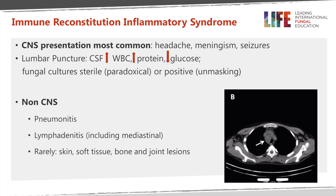IRIS can also occur outside the central nervous system. It can present with new respiratory symptoms and a pneumonitis on chest X-ray or CT scan. It can also present as swollen lymph nodes — lymphadenitis. As pictured in this CT scan, mediastinal lymph nodes previously containing cryptococcus inhaled into the lungs can become inflamed and visible on CT scan. Rarely, there can be manifestations of disease in other organs.